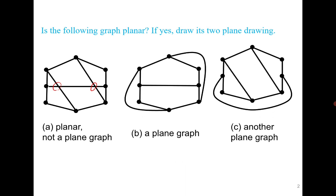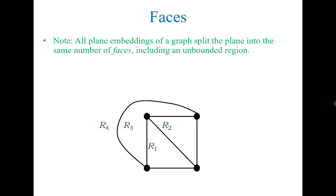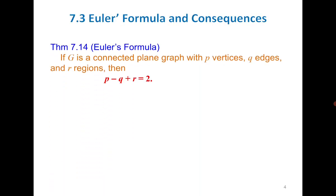These are two different ways to draw the graph without edge crossings. Next, we discussed the concept of faces. When we draw a plane graph — a planar embedding — it partitions the plane into different regions: one exterior region and several interior regions, which we call faces.